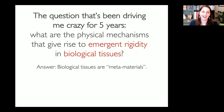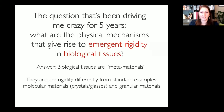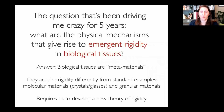I think the answer is that biological tissues are mechanical metamaterials — and I'm going to make that statement really precise. They acquire rigidity differently from standard examples like crystals, glasses, or granular materials. They acquire rigidity via a different mechanism, and understanding this required us to develop a new theory of rigidity. This is the arXiv paper we're submitting today.